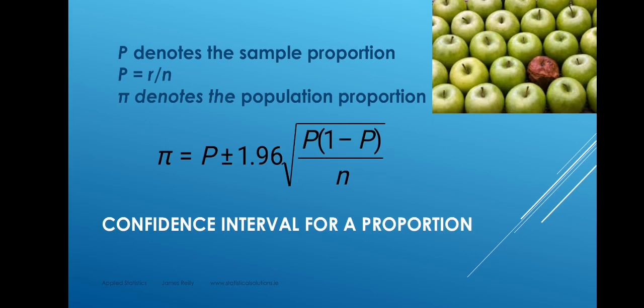So in order to estimate pi, the population proportion, we say pi equals P, the sample proportion — which is the unbiased point estimate — plus or minus 1.96, which provides 95% confidence, times the square root of P times (1 minus P) over N. That quantity, the square root of P times (1 minus P) over N, is the estimated standard error of a proportion.